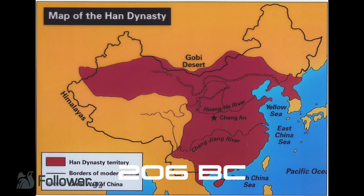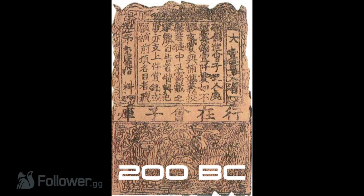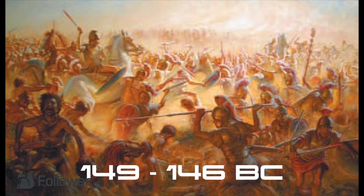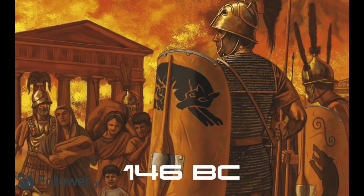The Han Dynasty is established in China after the death of Qin Shi Huang. China officially becomes a Confucian state and opens trade connections with the West. Scipio defeats Hannibal at the Battle of Zama. Paper is invented in China. The Third Punic War between Rome and Carthage happens. The war ends with the complete destruction of Carthage, allowing Rome to conquer modern-day Tunisia and Libya.